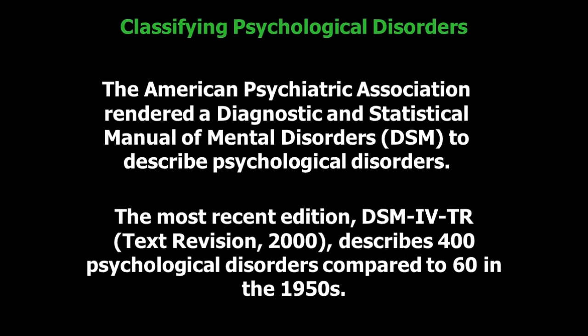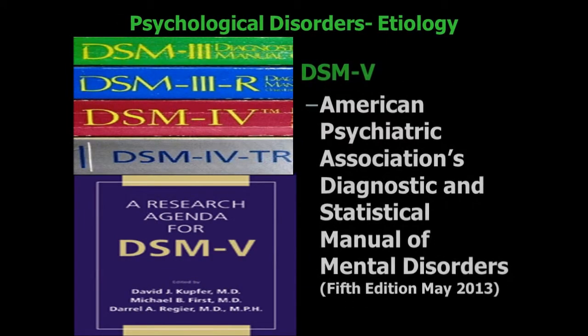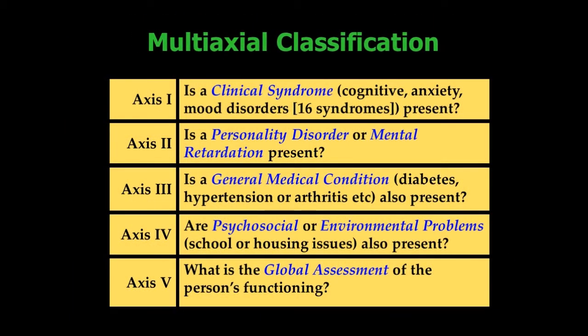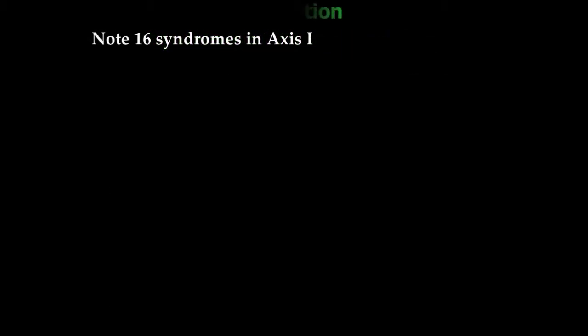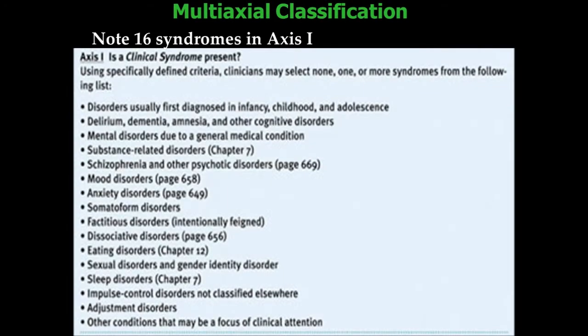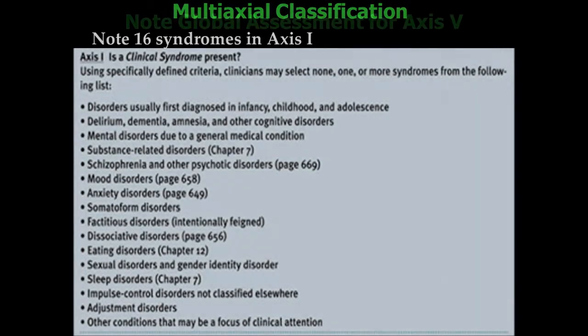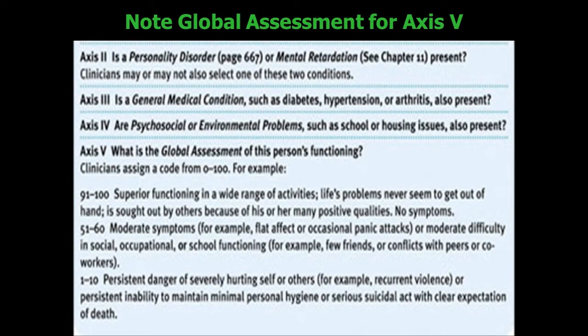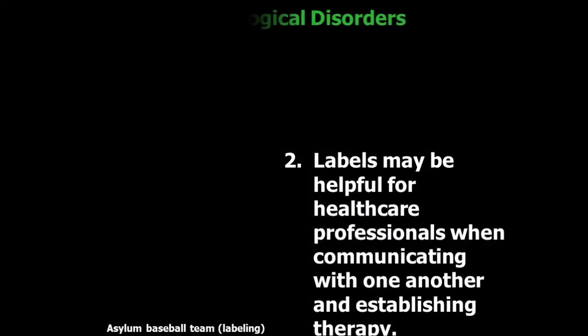Know the medical model. Know the biopsychosocial model. Know the idea of the DSM-IV — what it does and what it doesn't do. It is used for classifying; it does not explain causes for disorders, it just helps classify them. Once we have classified disorders using the DSM-IV, we can find what the patient has. They then get a label, meaning they have this disorder.